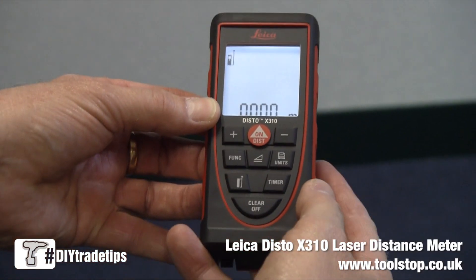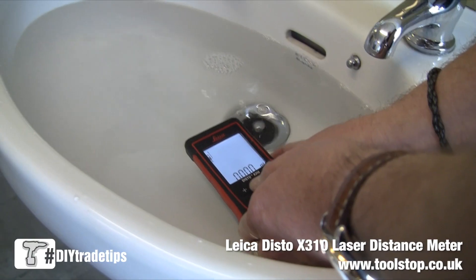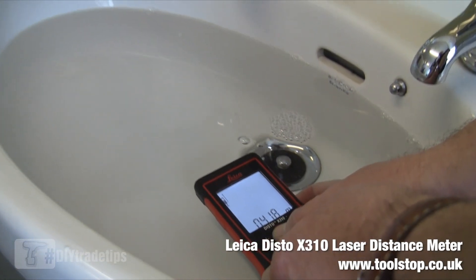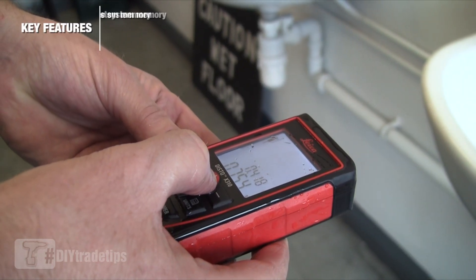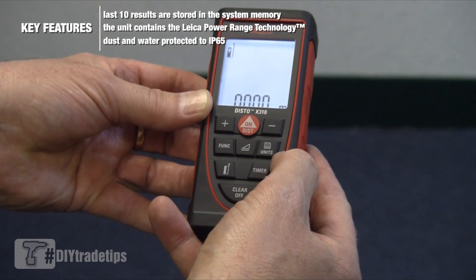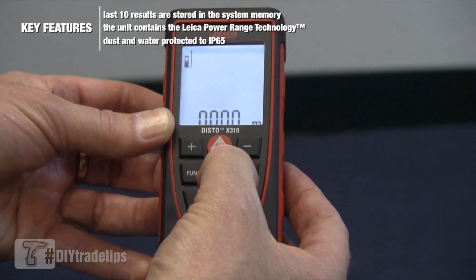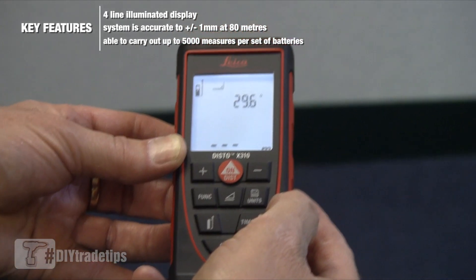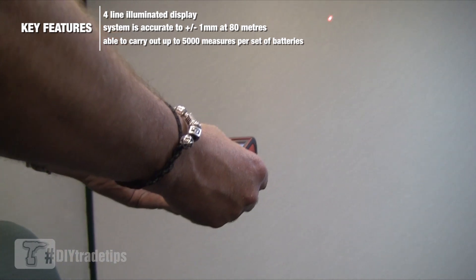This is the new Disto X310 from Leica. It's a ruggedized laser distance meter, waterproof to IP65, and features a 360-degree tilt sensor which allows you to get the vertical angle to an object and, more importantly, horizontal distance to obstructed points.